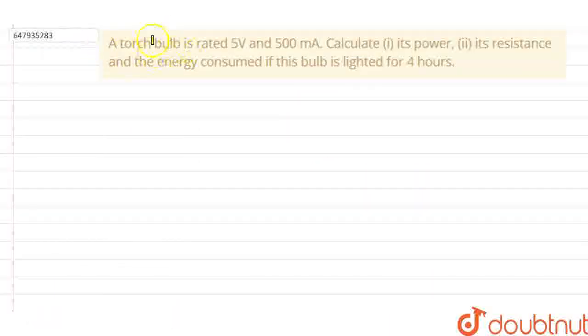Hello everyone. This question has been given that a torch bulb is rated 5 volts and 500 milliampere. Calculate: one, its power; second, its resistance; and third, the energy consumed if this bulb is lighted for 4 hours.